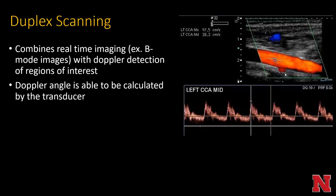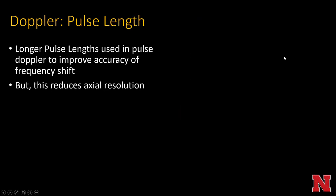Duplex scanning combines a real-time B-mode imaging study with Doppler detection of the region of interest. The Doppler angle is calculated automatically by the transducer — you don't need to calculate it manually. This produces an image such as a carotid artery display. Regarding pulse length: a longer pulse length used in pulse Doppler improves accuracy of the frequency shift but reduces axial resolution, so there's always a trade-off between accuracy and resolution.